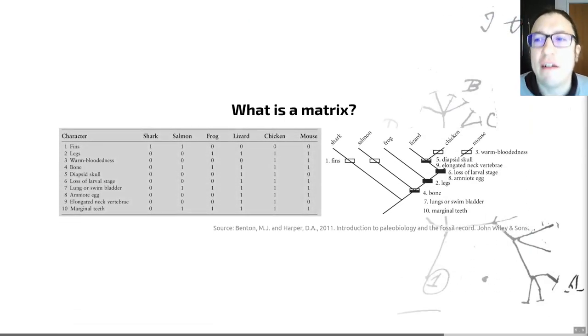Once we have these characters, these need to be coded into a phylogenetic matrix. So this is just a matrix of characters such as that shown on the left hand here. So these characters aren't particularly well defined, but they'll do for our purposes. And you can see, for example, the absence or presence of fins, legs, or warm bloodiness are all featured in this matrix, which is just a list of our characters against a list of our different organisms. In this case, shark, salmon, frog, lizard, chicken, and mouse.